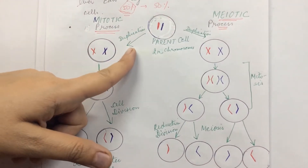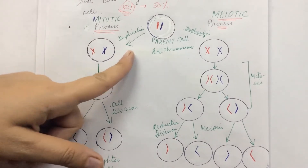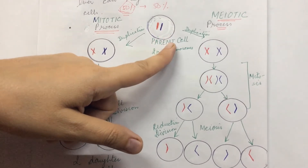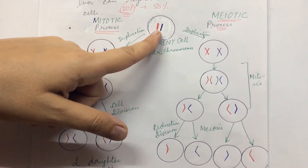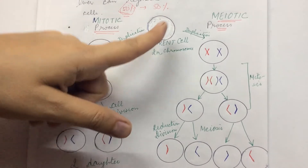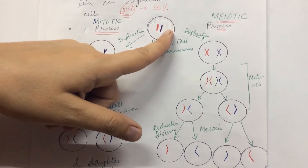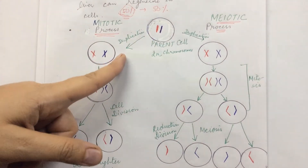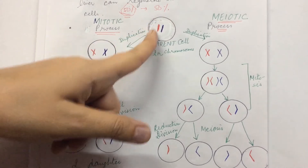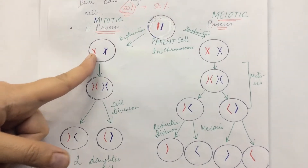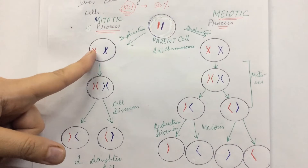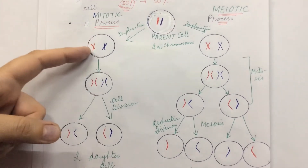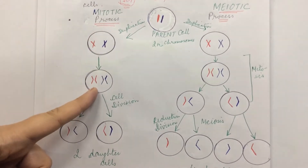In the diagram, red chromosomes are from the father and blue from the mother. Every parent cell has one chromosome from each. The first step toward mitotic division is duplication of these chromosomes — you can see red duplicates and blue duplicates. Then these duplicates, which were first attached to each other, get separated.